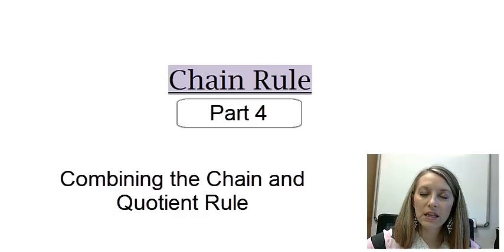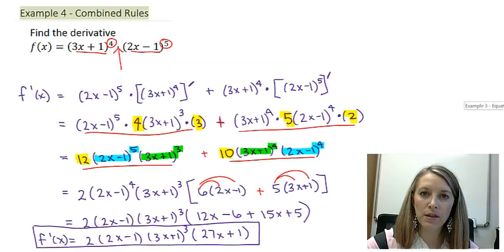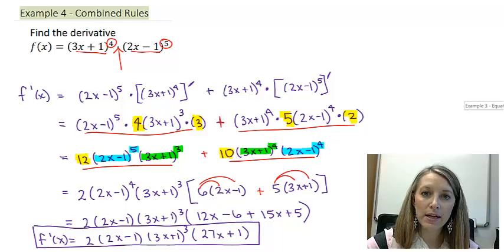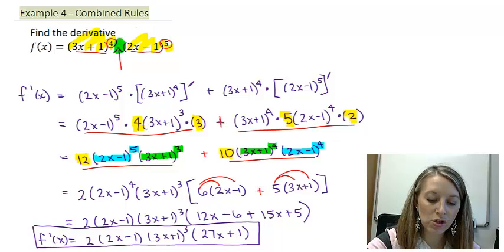We are working on taking the derivative using the chain rule, but we're also working on combining it with some of our larger rules. In the last example, we had to combine it with a product rule, but we knew the very first rule we had to do was the product rule because we had two separate inside-outside pieces, so that told me the rule I should start out with was the product rule.